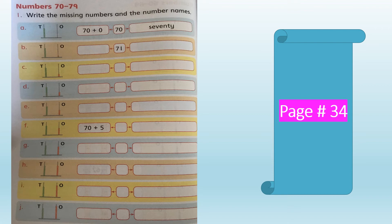Revise with me: S-E-V-E-N-T-Y, 70. In part B, there is 1 red bead in the ones rod and 7 green beads in the tens rod. So 7 tens and 1 one makes 71. The number name is S-E-V-E-N-T-Y, hyphen or space, O-N-E — seventy-one, 71. In the same manner, write the missing numbers and number names for parts C, D, and E.